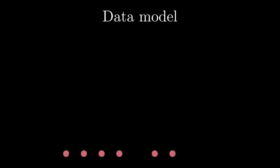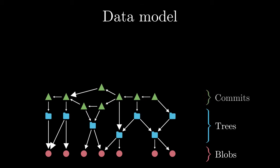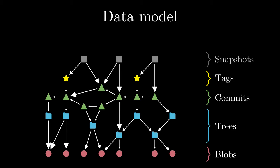We leverage the Software Heritage data model to precisely define our intrinsic forks. It's a Merkle directed acyclic graph. At the bottom level, you have blobs — the binary representation of the files in the archive. Above that, directory trees that can either contain each other or contain blobs. Then commits, which represent the history of the repository. Tags, which represent named versions. Snapshots, which contain the list of branches and tags. And finally repositories, which are our main object of interest when studying forks.